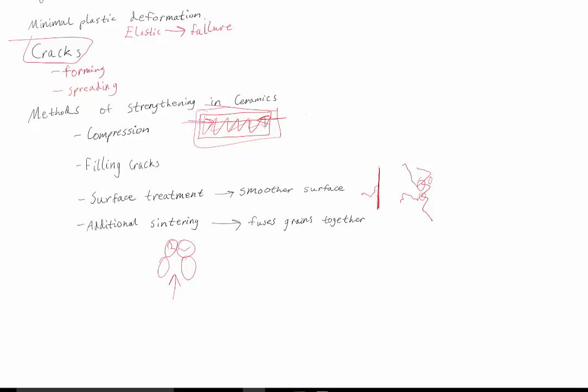because there's a gap for it to get to. And additional sintering would fuse the grains more, so maybe they're like this, and there's just a little hole here, and it's not as easy for a crack to form because there's no longer a big gap.